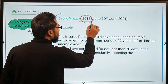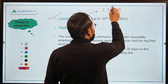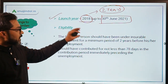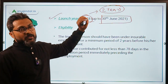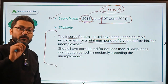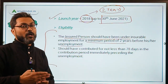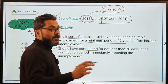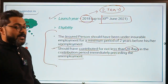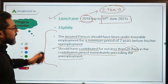Initially it was launched as a pilot scheme for two years, but during the pandemic and lockdown it was extended up to 30th June 2021. Regarding eligibility, the insured person should have been under insurable employment for a minimum period of two years before unemployment, and should have contributed for not less than 78 days in the contribution period immediately preceding the unemployment.